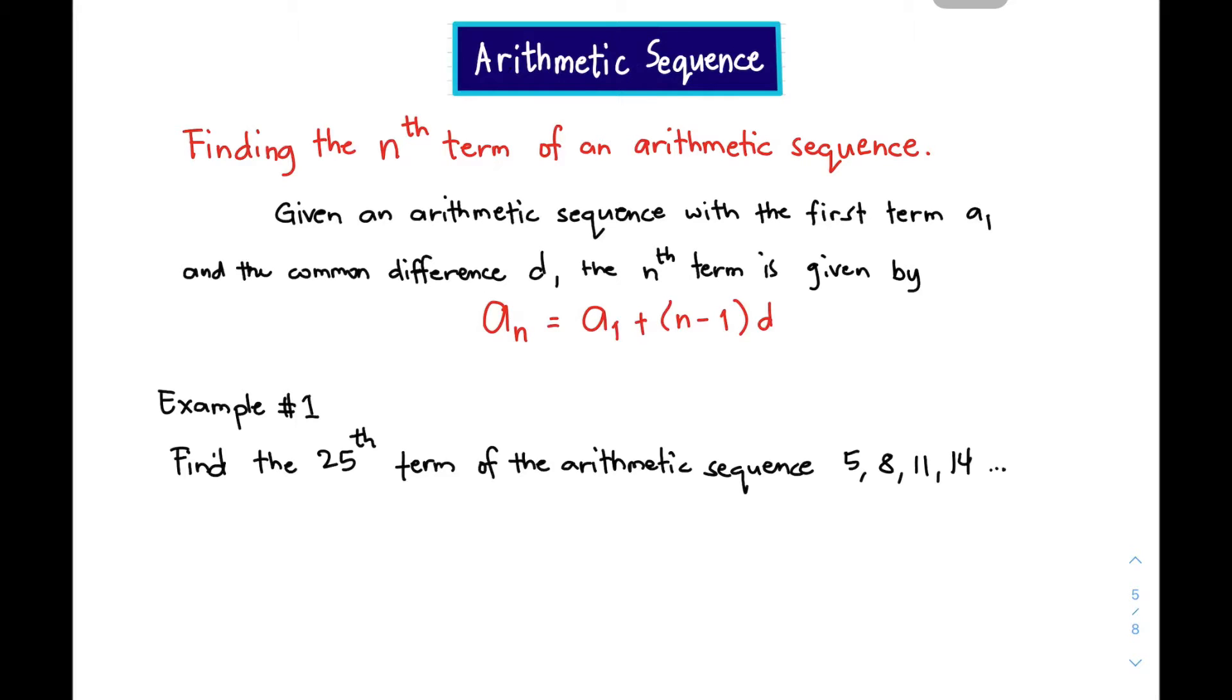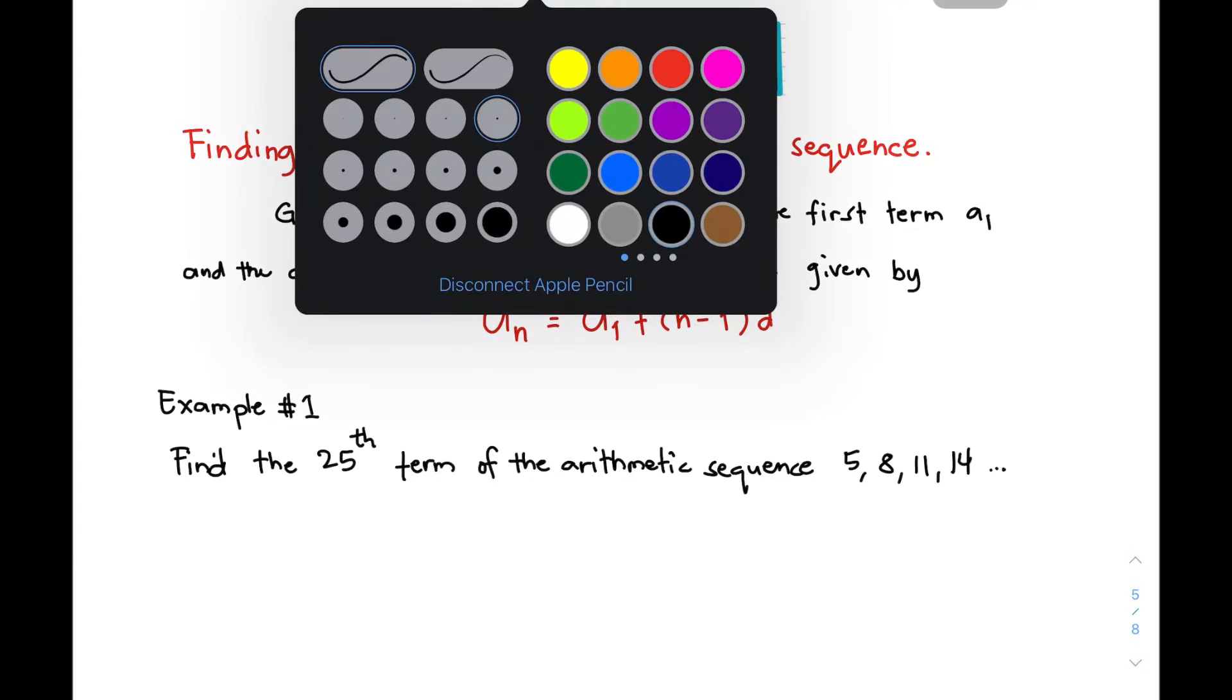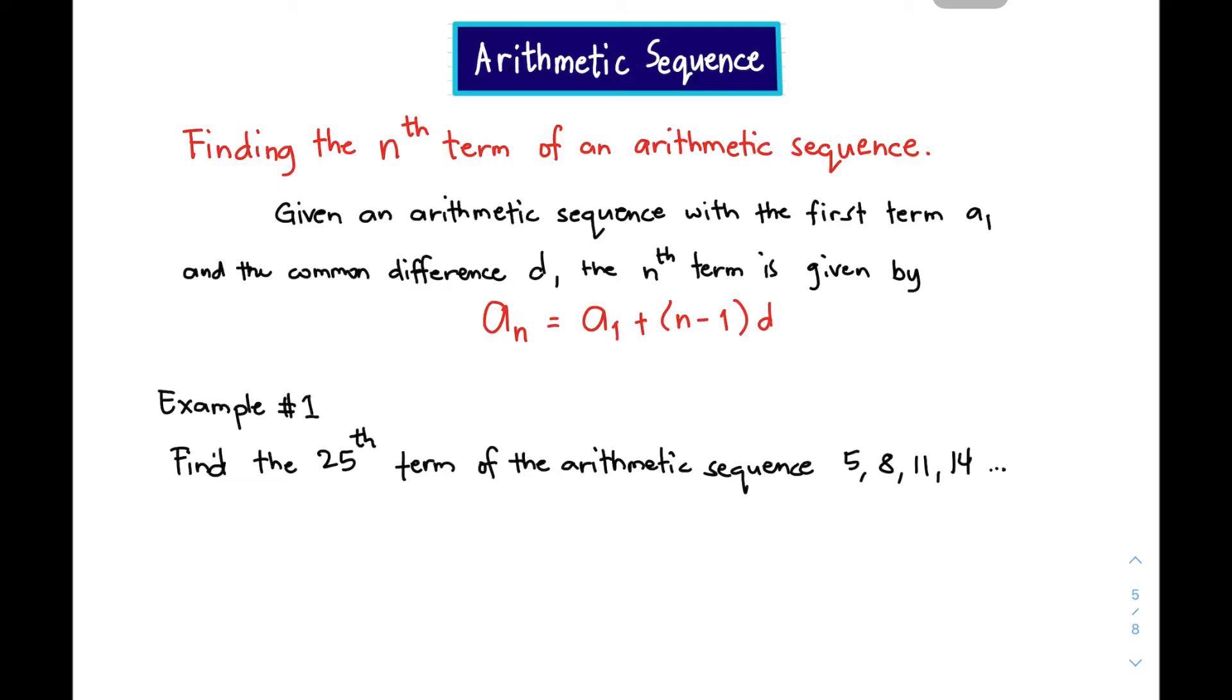Hi guys, it's me, teacher Gon. In our today's video, we will do finding the n-term of an arithmetic sequence. Given an arithmetic sequence with the first term a₁ and the common difference d, the n-term is given by the formula aₙ = a₁ + (n-1)d.